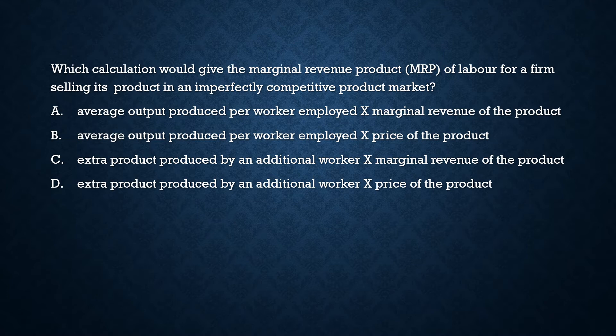Options A and B are wrong because they use average output produced per worker. Option A uses average output multiplied by marginal revenue product — that's wrong. Option B uses average output multiplied by price of the product — also wrong. The correct formula for marginal revenue product is marginal physical product — that is, the extra product produced by an additional worker — multiplied by the marginal revenue of the product.